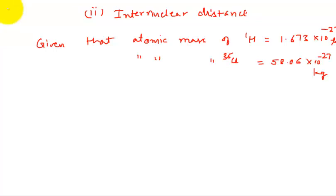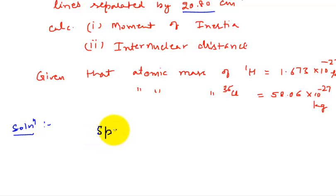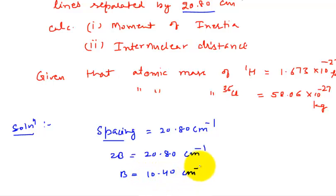Going to the solution: what is given — the spacing between the spectral lines is 20.80 cm⁻¹. So spacing = 2B = 20.80 cm⁻¹, which gives B = 10.40 cm⁻¹. Converting to SI units by multiplying by 100, B = 1040 m⁻¹.